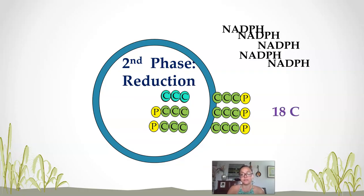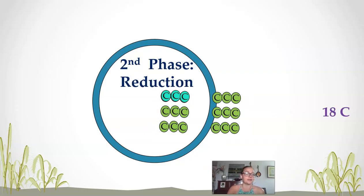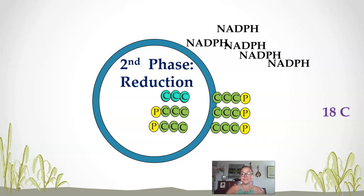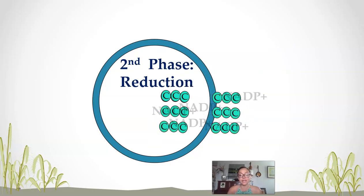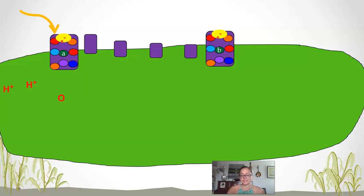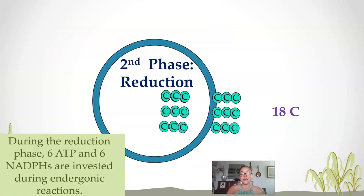You do not need to memorize all the little details and reactions occurring. Remember our big picture: we are trying to understand the big idea of the Calvin cycle. You've seen here that the plant has taken in carbon dioxide in carbon fixation using the enzyme RuBisCO, forming a six-carbon molecule that is unstable and breaks into two three-carbon molecules.